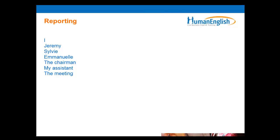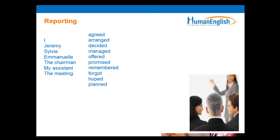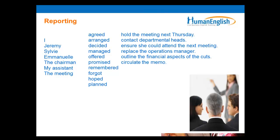When we do reporting — when we report what each person has to do — we can use some verbs. Here is the subject, the names of the people, and then we have some verbs: agreed, arranged, decided, managed, offered, promised, remembered, forgot, and hoped and planned. And then we have the end of the expression. If you look carefully, there is a preposition missing after the verb — one preposition that comes after the verb to connect and construct the sentence. Can you write down in the chat box what is the preposition that is missing?